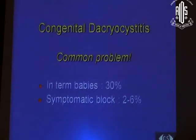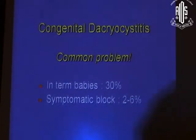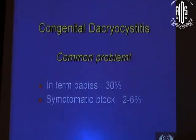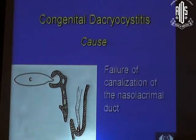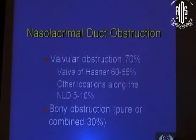The incidence is as high as 30% in term babies, but about 2-6% remain symptomatic. The rest resolve spontaneously, with or without parents having noticed a little bit of epiphora. The cause is specifically failure of canalization of the nasolacrimal duct, which is of course embryological.